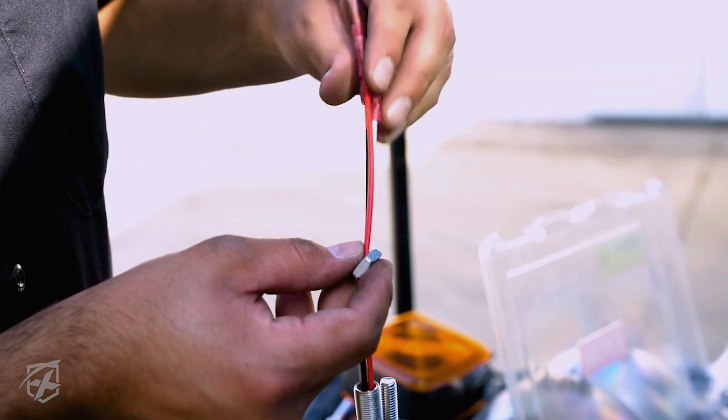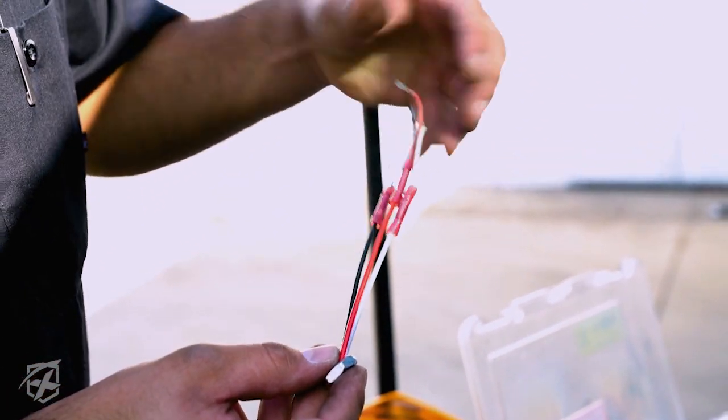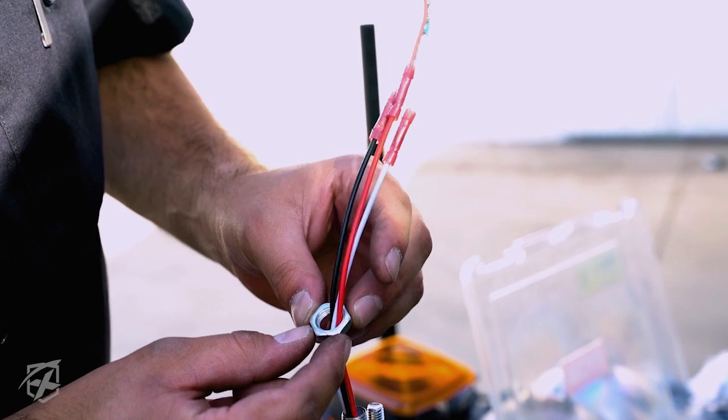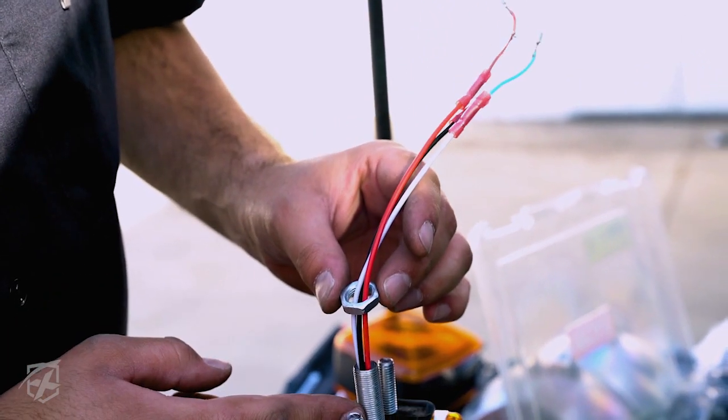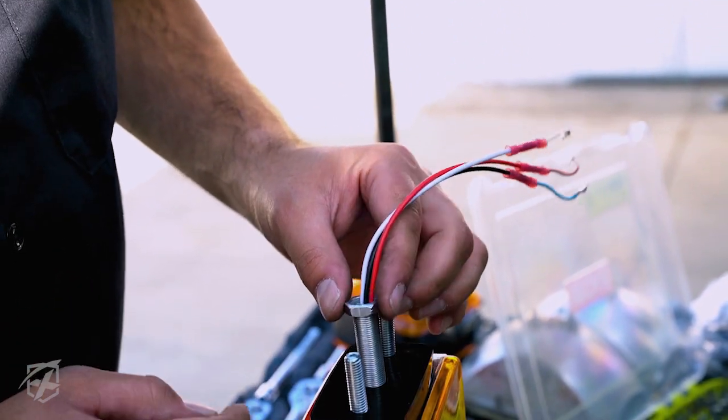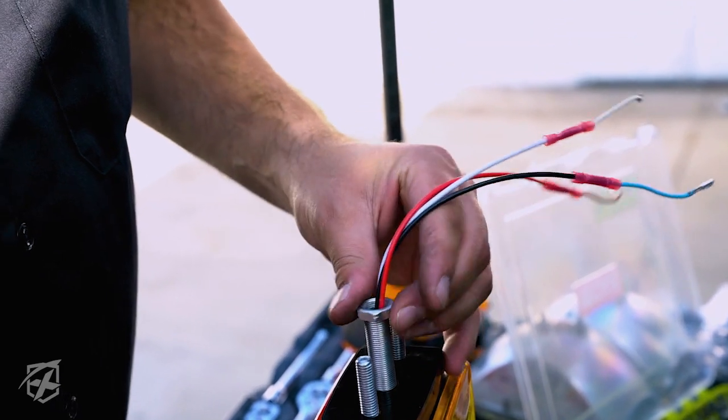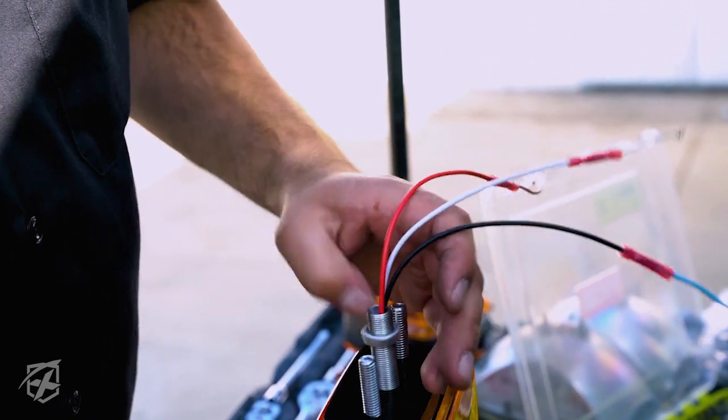Alright guys, once you've spliced your wires together from the stock harness, you want to make sure you grab the included hardware nut for this middle post and put that on prior to installing your light. Make sure you tighten it down all the way.